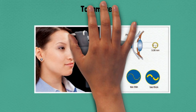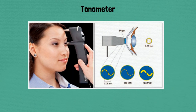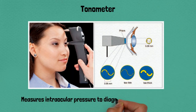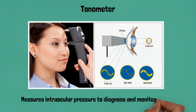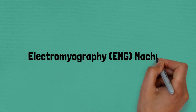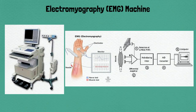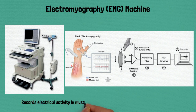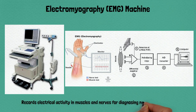Ninety-eight: tonometer, measures intraocular pressure in eyes to diagnose and monitor glaucoma. Ninety-nine: electromyography machine, records electrical activity in muscles and nerves for diagnosing neuromuscular disorders.